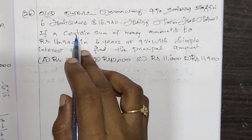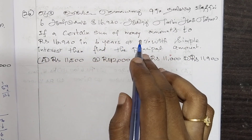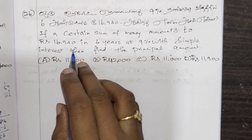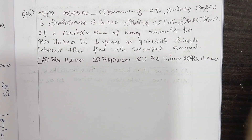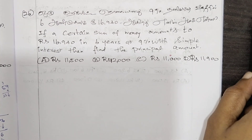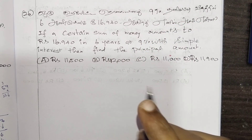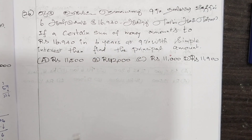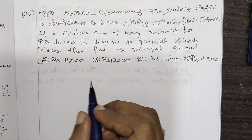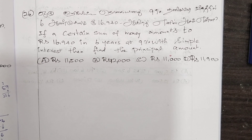If a certain amount of money amounts to ₹16,940 in 6 years at 9% simple interest, then find the principal amount. This covers the 6th year total amount, going back from the 4th to 5th year. This is the model for this problem.